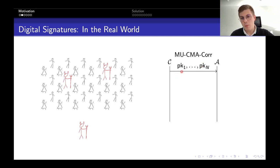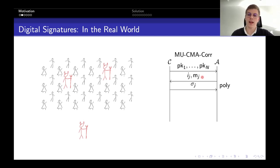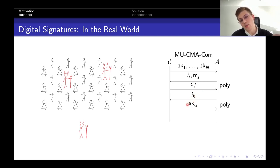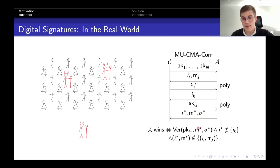In the multi-user security game, the adversary first gets public keys for n users. Then it can ask for signatures for messages of its choice, specifying which user should sign. In addition, the adversary can also ask for secret keys — it can corrupt users. In the end, it outputs a message-signature pair for some target user i-star, and wins if this is a valid pair for that public key, the user is not corrupted, and it never learned a signature for message M-star from that user.